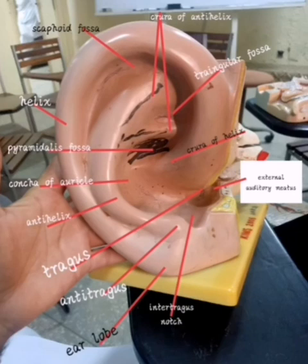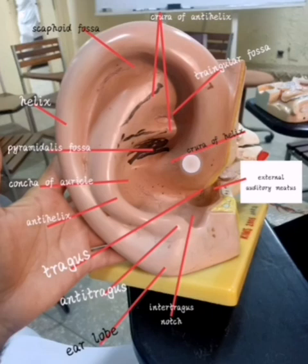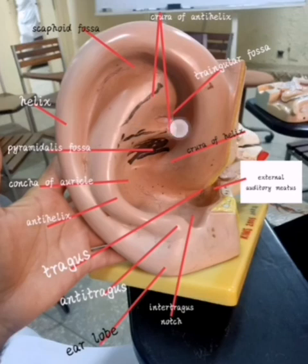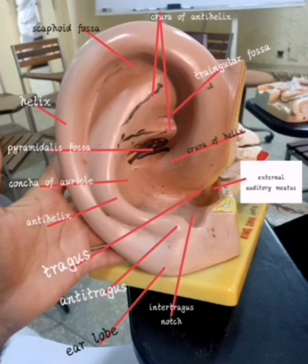Now we are left with some structures. We have two ridge-like things just at the upper level of the anti-helix — these are known as the crura of the anti-helix. And the helix-like structure here also has a ridge-like structure known as the crus of the helix. So we have two crura of the anti-helix and one crus of the helix.